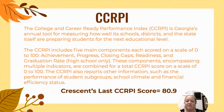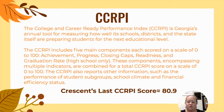Our CCRPI — the College and Career Ready Performance Index — is Georgia's annual tool for measuring how well its schools, districts, and the state are preparing students for the next educational level. The CCRPI includes five main components, each scored on a scale of 0 to 100: achievement, progress, closing gaps, readiness, and graduation rate for high school. Those components are combined for a total CCRPI score. The CCRPI also reports student subgroup performance, student climate, and financial efficiency status. Crescent's last CCRPI score was an 80.9, which was the highest in the county.